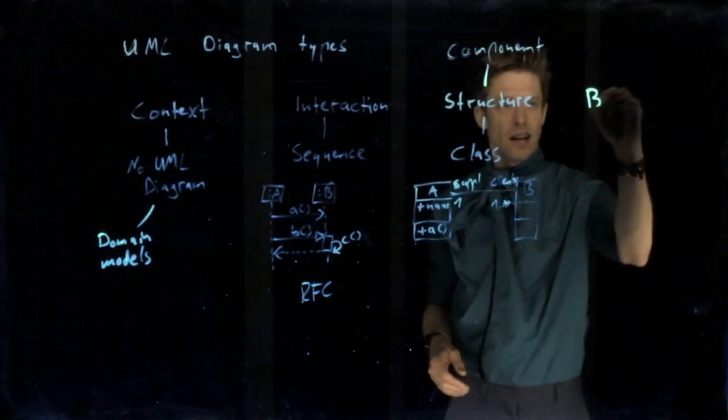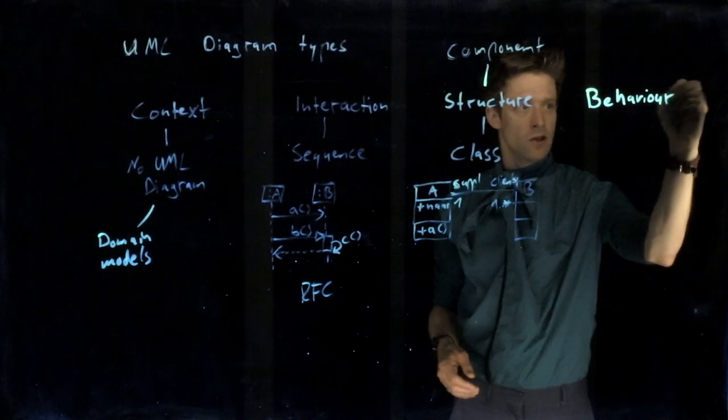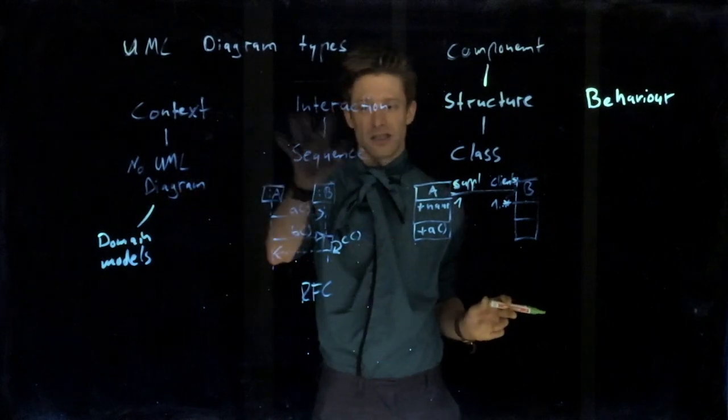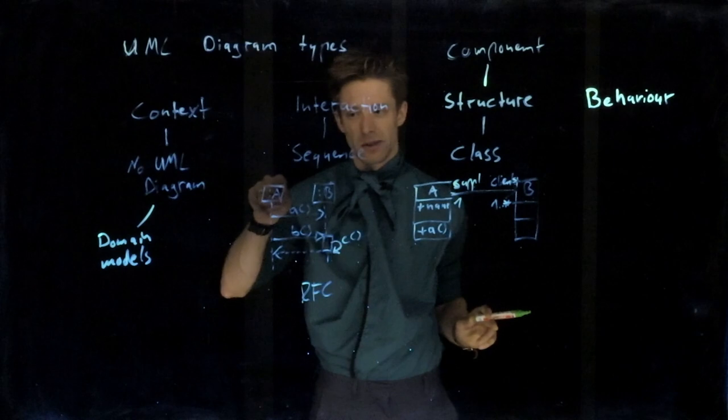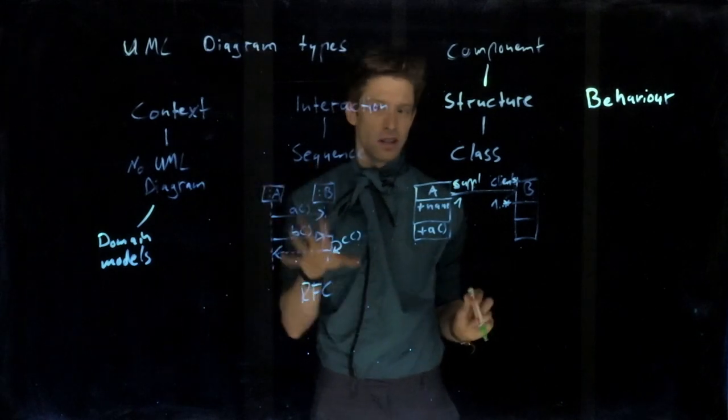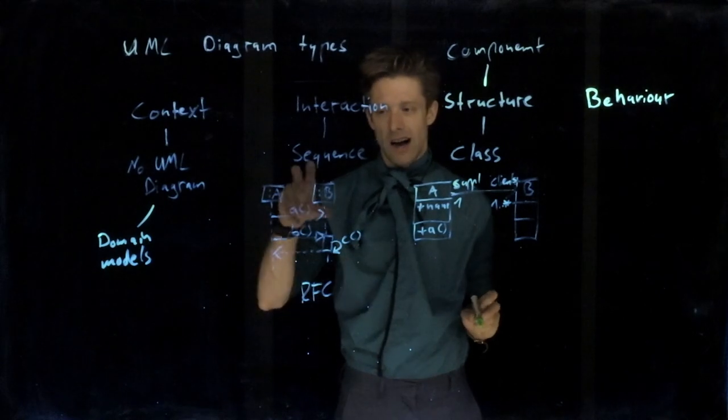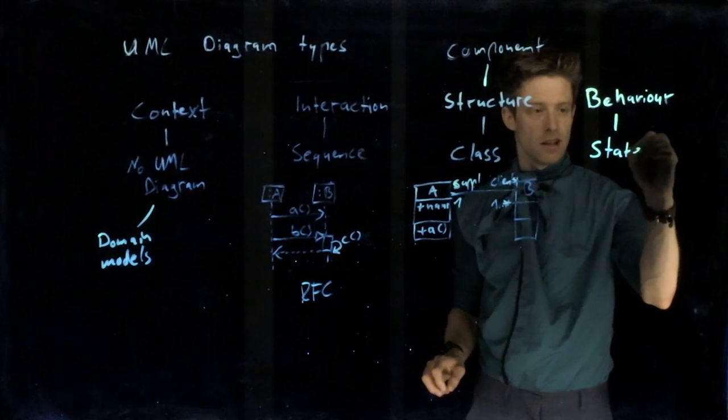Finally, we have behavior diagrams. Behavior diagrams describe behavior, but in contrast to interaction, they don't describe what's going on between A and B. They describe what's going on in A or in B. Here the focus is not how do several units communicate but how does one unit work. The classic example is the UML state machine diagram.